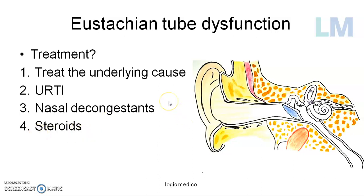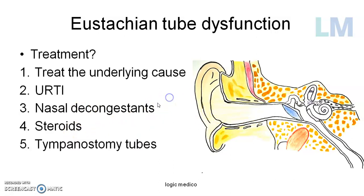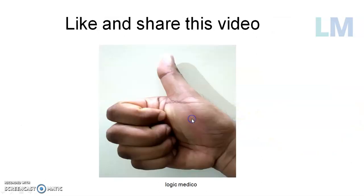Steroids are anti-inflammatory drugs that reduce the signs of inflammation — swelling, pain, and redness — and play an important role in reducing edema around the eustachian tube. As a last resort, a tympanostomy tube can be placed in the tympanic membrane area so that the middle ear can be ventilated from the outside, when the eustachian tube cannot be opened from the nasopharyngeal side. That is the logic of the tympanostomy tube.